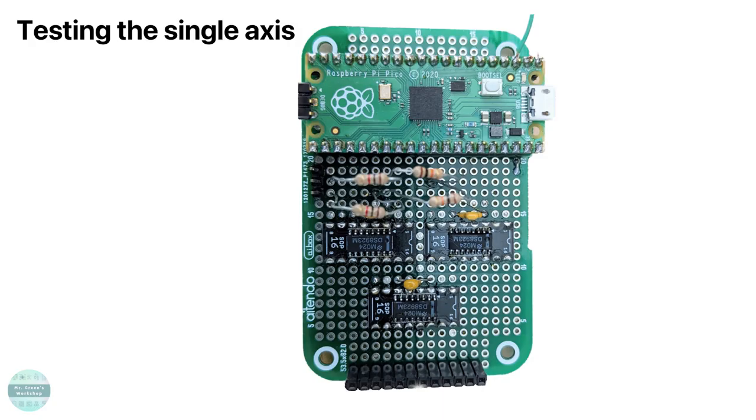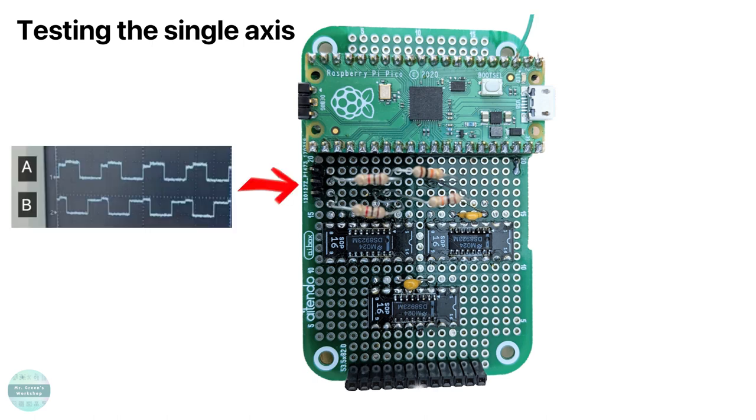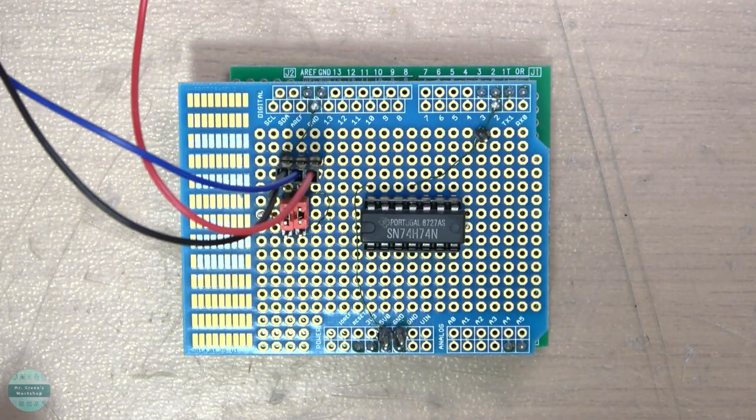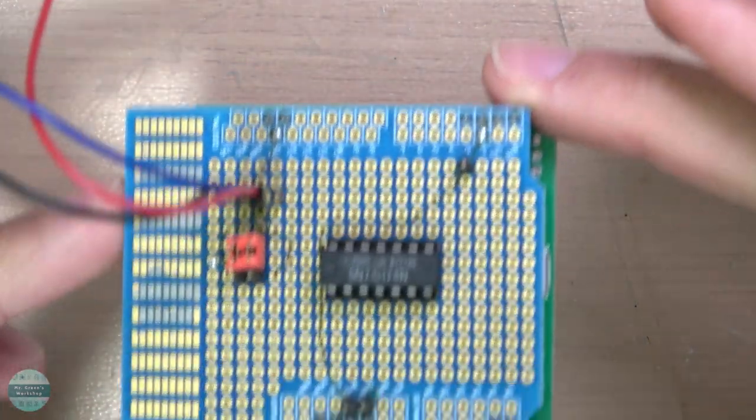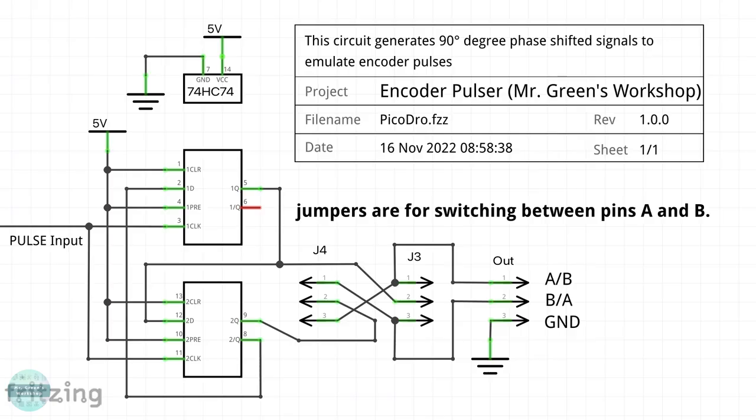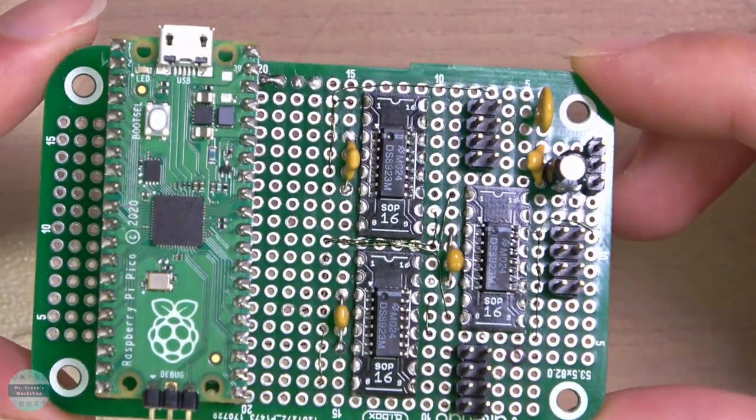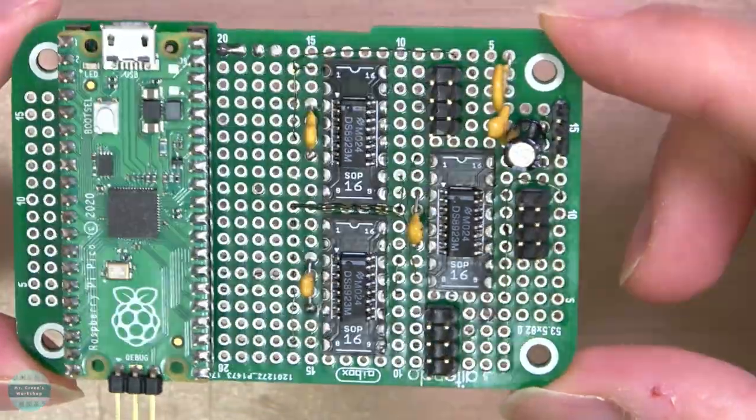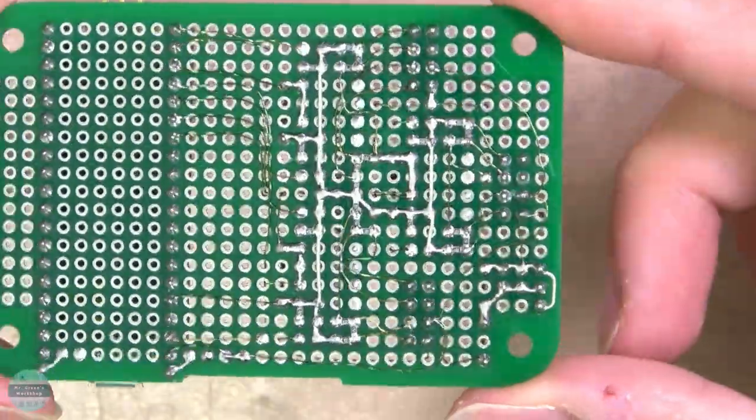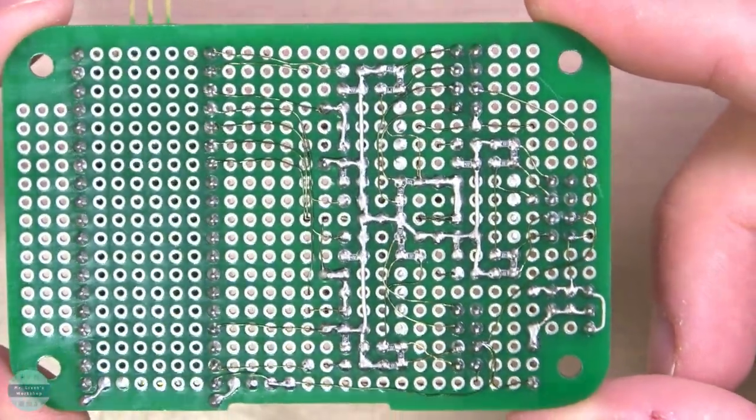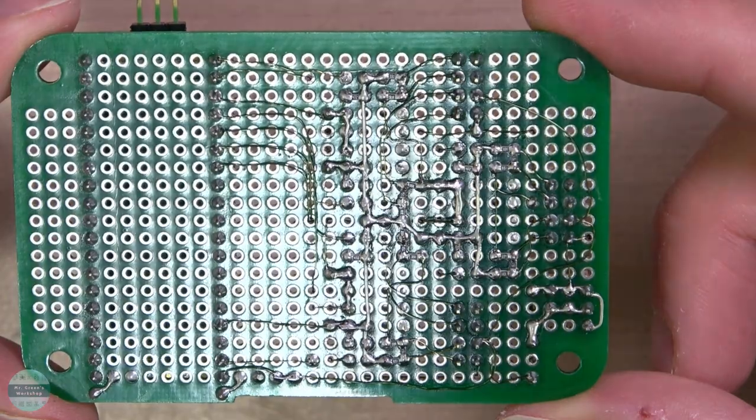To test a single axis, I need to apply a known number of pulses and check the RPI Pico output to see if it matched. Since I don't have a signal generator, I made a circuit to generate 90 degree phase shifted signals using dual flip-flops to emulate encoder pulses. After testing, I soldered other components like RS422 drivers, and then I soldered and wired the pin headers for all linear scales.